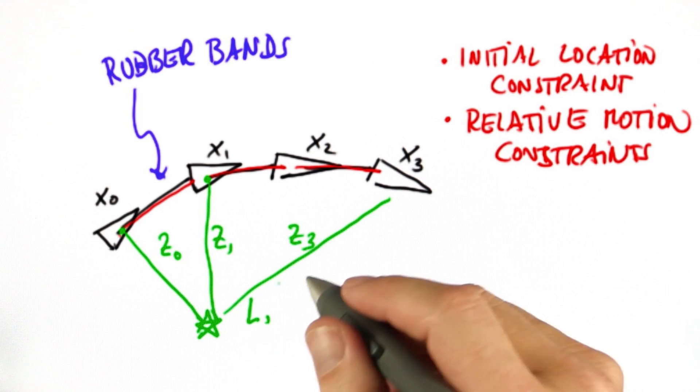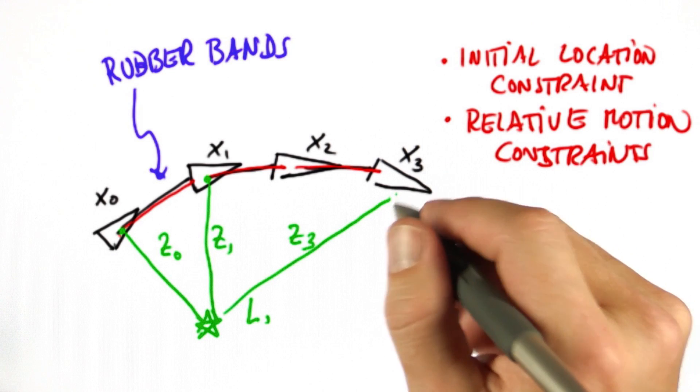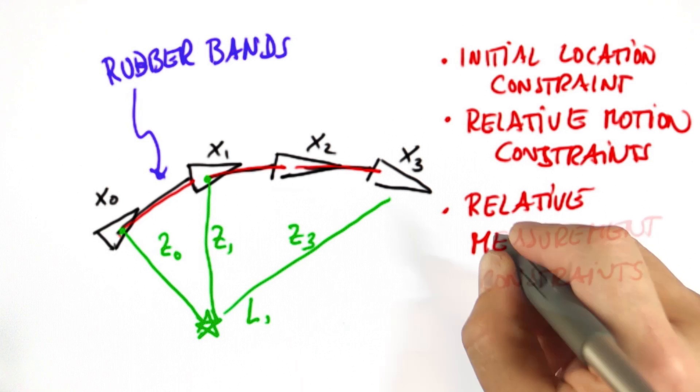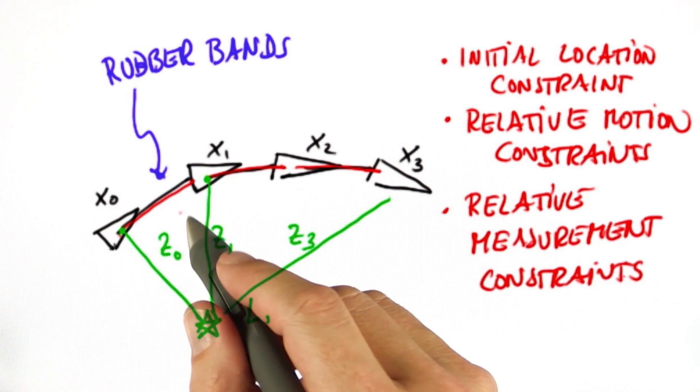These are also relative constraints, very much like the ones before. Again, they're captured by Gaussians, and we get relative measurement constraints, one constraint every time the robot sees a landmark.